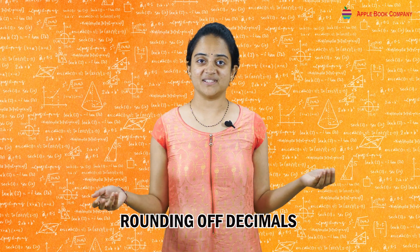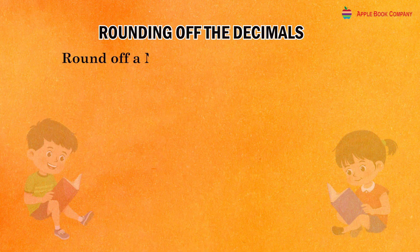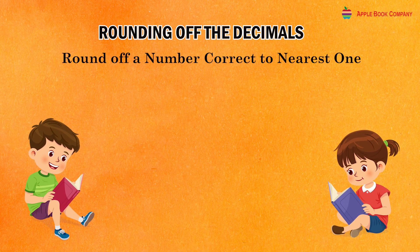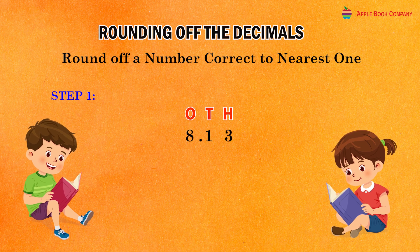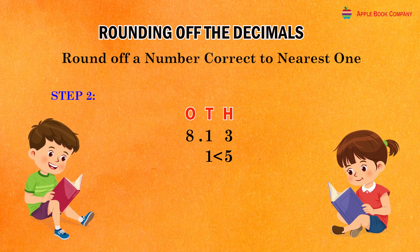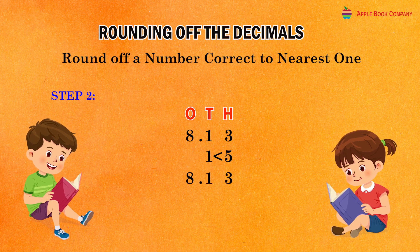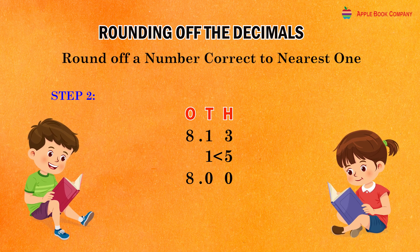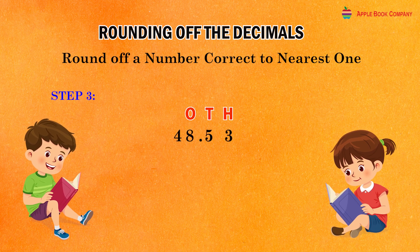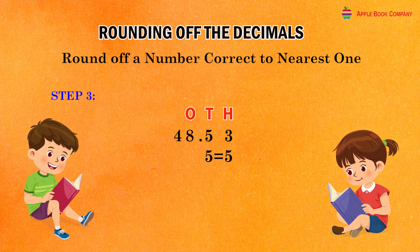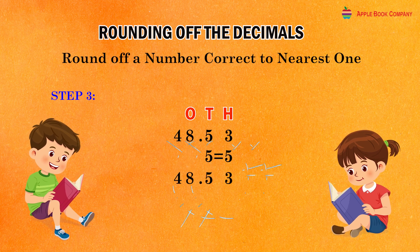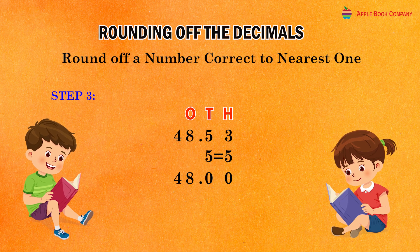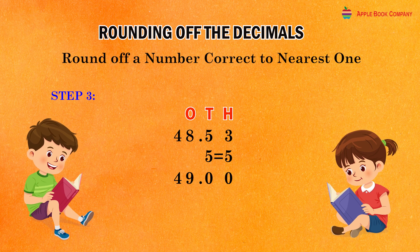Rounding off decimals. Rounding off a number correct to the nearest one: check the digit at the first decimal place. If the digit at the first decimal place is less than 5, replace each digit after the decimal point by zero and keep all the digits before the decimal point as they are. If the digit at the first decimal place is 5 or greater than 5, replace each digit after the decimal point by zero and increase the digit at the ones place by one.